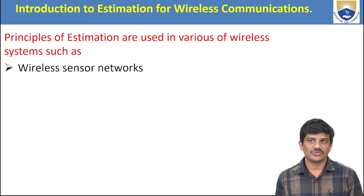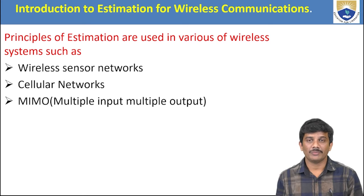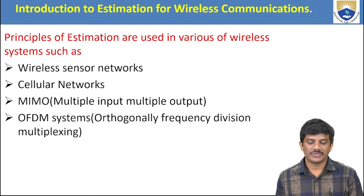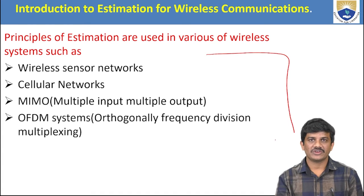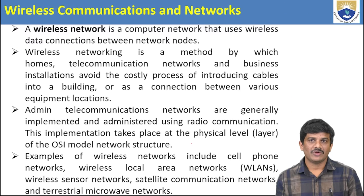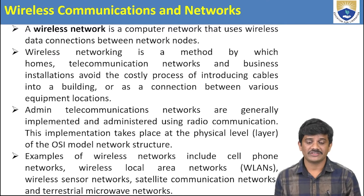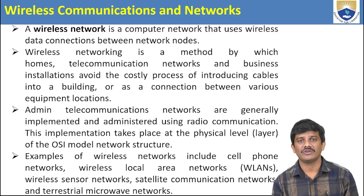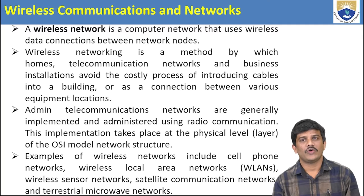The principles of estimation are used in various systems such as wireless sensor networks, cellular networks, and MIMO (Multiple Input Multiple Output). We also have OFDM — Orthogonal Frequency Division Multiplexing. These are the estimation techniques used in the wireless communication system. Mainly, a wireless network is a computer network that uses wireless data connections between network nodes.